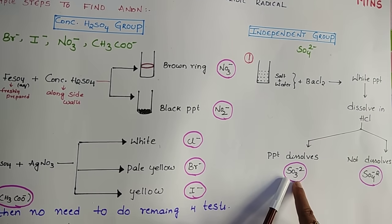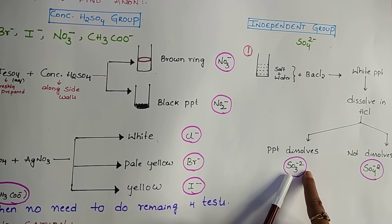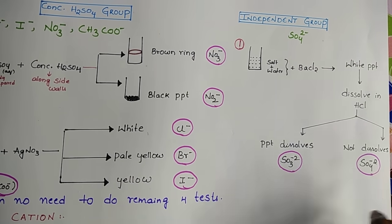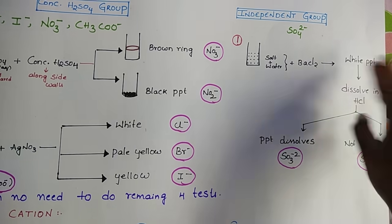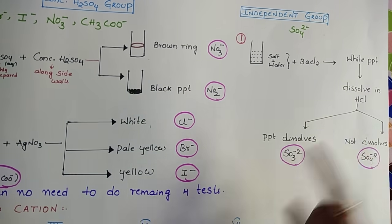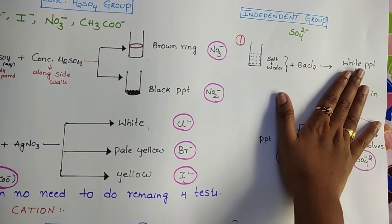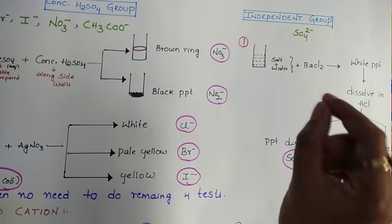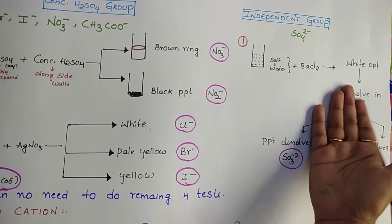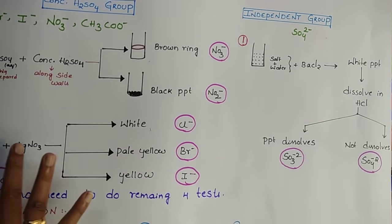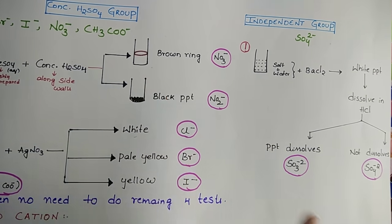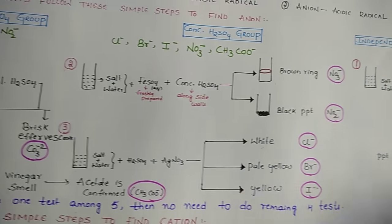Once you get the white precipitate, add dilute HCl. If the white precipitate dissolves in dilute HCl, it indicates SO₃²⁻ — sulfite ion. If it is not soluble in dilute HCl, then it is sulfate ion. If white precipitate is not formed at all, no need to do the reaction with dilute HCl — stop here. Take test tube, add salt, add water, add barium chloride: white precipitate means continue; no white precipitate means go to the next test.